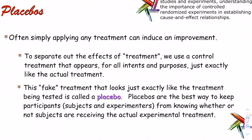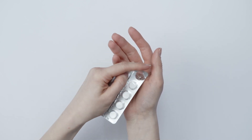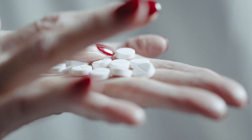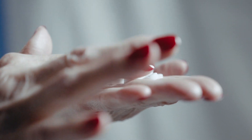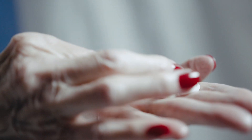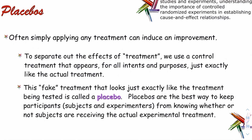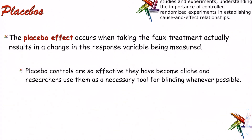Simply applying any treatment can induce an improvement. There are plenty of examples where people take a sugar pill and feel 10 times better. To separate out the effects of treatment, we use a control treatment that appears identical to the actual treatment — this fake treatment is called a placebo. Placebos are the best way to keep participants and experimenters from knowing who is receiving the actual treatment. This leads to the placebo effect — when taking the fake treatment actually results in a change in the measured response variable, like feeling healthier.